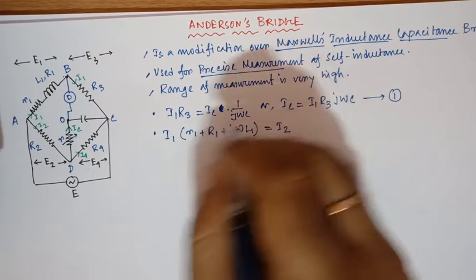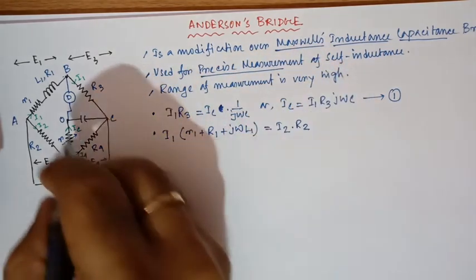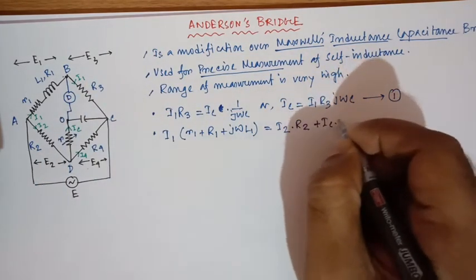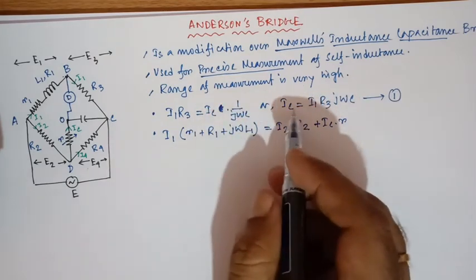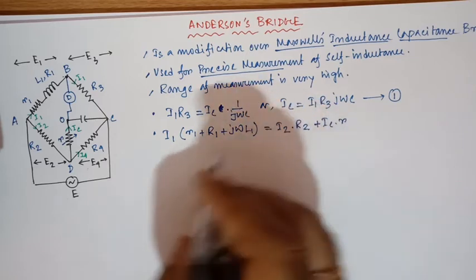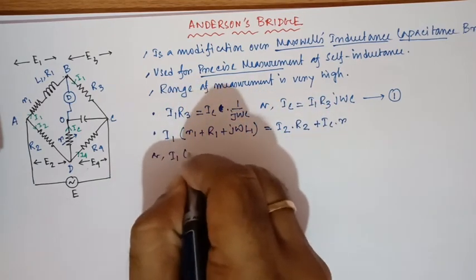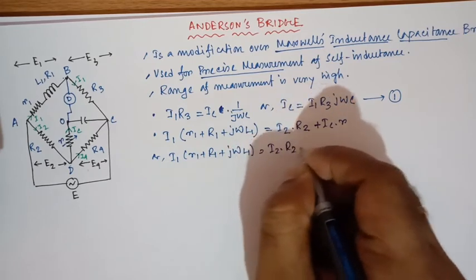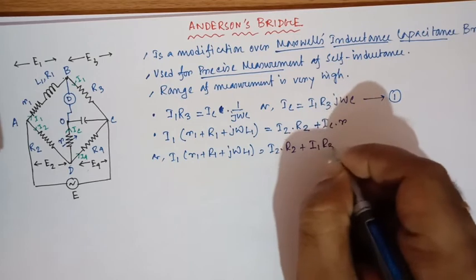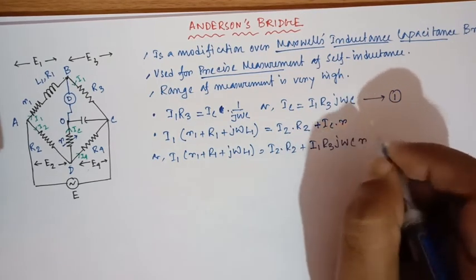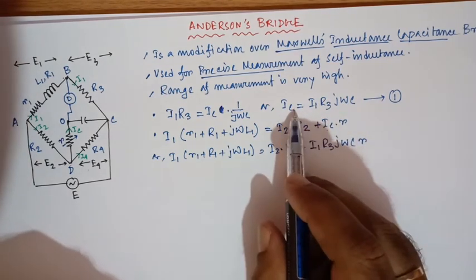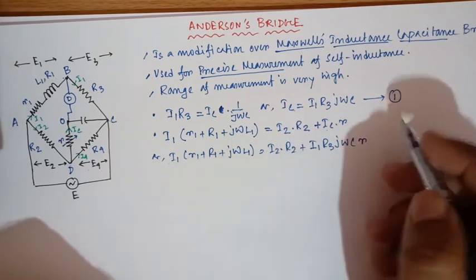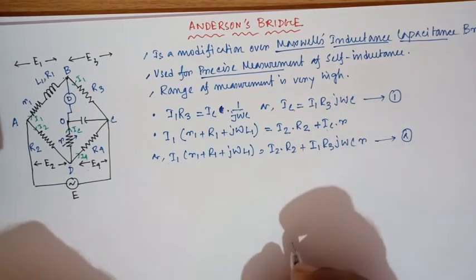The voltage drop from A to B is i1 × (r1 + R1 + jωL1). The voltage drop along path A to O is i2 × R2 plus ic × r. Substituting ic from Equation 1, we get: i1(r1 + R1 + jωL1) = i2·R2 + i1·r3·jωC·r. This is Equation A, which contains only branch currents i1 and i2.